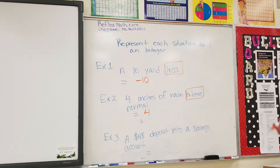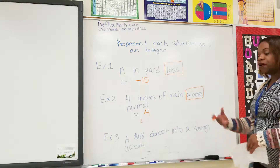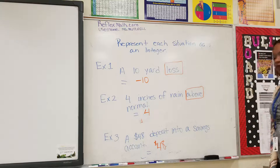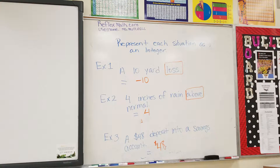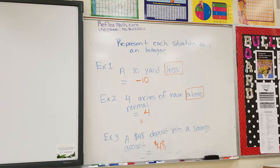Example number three: a $48 deposit into a savings account. How would we represent that? First, we need to know the meaning of deposit. Deposit means that we're putting money into the bank, into our savings account. So if we now have $48, therefore it will be a positive 48. Because withdrawal would mean that we're taking money out — we no longer have the money. But we made a deposit, meaning we put the money back into the account, so now we have money to spend. Please pause the video, take down your notes, and then press play when you are ready to move on.